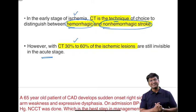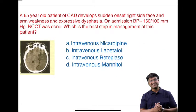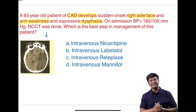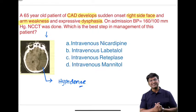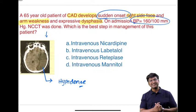Another clinical scenario: a 65-year-old patient with coronary artery disease develops sudden onset right-sided face and arm weakness, with expressive dysphasia. On admission, blood pressure is 160/100 mmHg. A CT scan was done. Observing the CT scan, there is a hypodense lesion, which indicates ischemic stroke. The onset is sudden and the time frame is not mentioned, but blood pressure is 160/100.